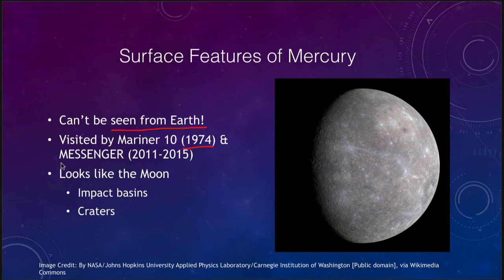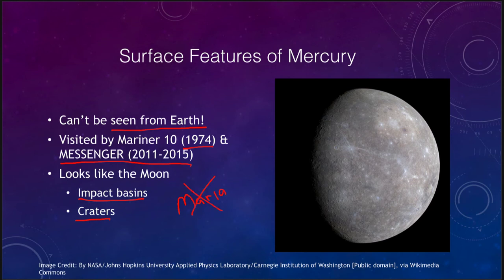We also had the MESSENGER spacecraft, which orbited Mercury for several years, giving us a complete detailed surface map of the planet. What we find is that it does look a lot like the Moon — we see lots of craters and large impact basins. What we don't see are the Maria: those darker, flooded basin surfaces seen on the Moon. We don't see those on Mercury on any side of it.